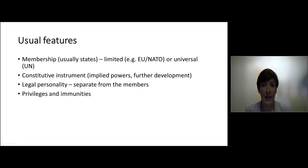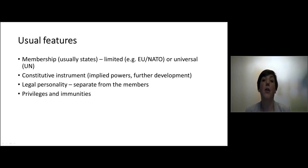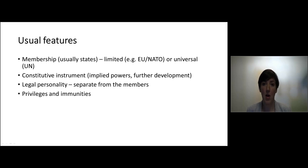The treaty that establishes the international organization contains the powers, functions, and tasks of the international organization. However, it is possible to acknowledge certain powers that are not explicitly within that treaty, because if you look closely at the task that an international organization needs to perform, there might be other powers required to perform that task. This is called the implied powers doctrine.